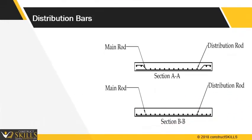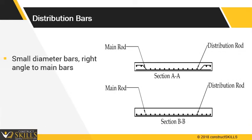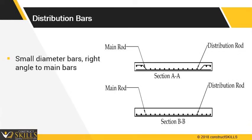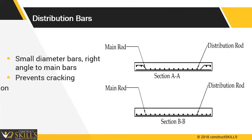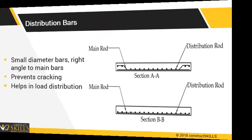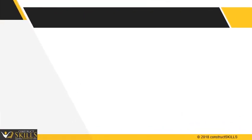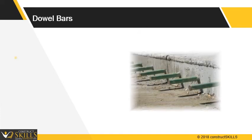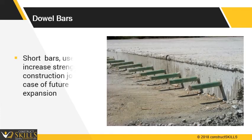Distribution bars are thinner bars placed at right angles to the main steel. They help prevent cracking and assist in load distribution. Dowel bars are short bars used to increase strength at construction joints.